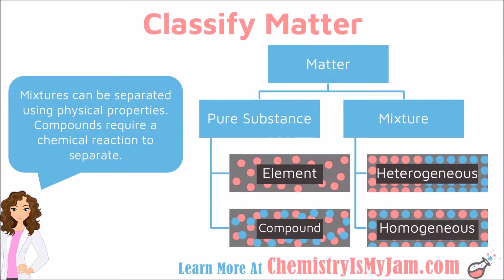In our chart, I have used a picture of a blue and a pink dot to represent a compound. Each one of these particles has a blue and a pink dot held together by a chemical bond. This is considered a pure substance because every single particle has a blue and a pink dot. Later in the course, we will go into details about the different types of bonds that hold compounds together.